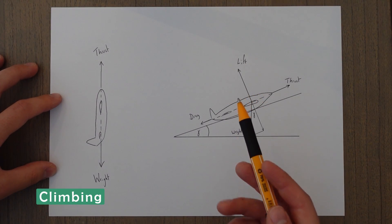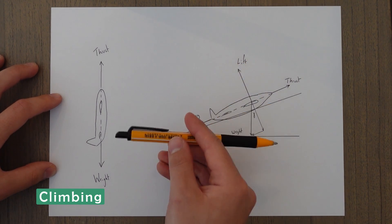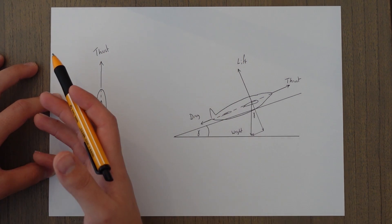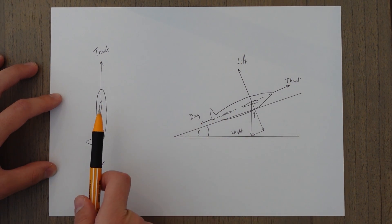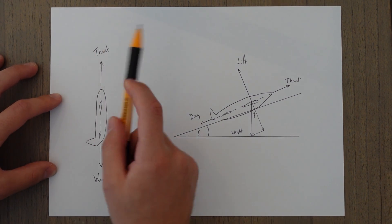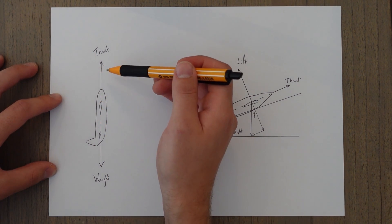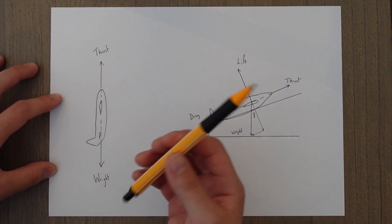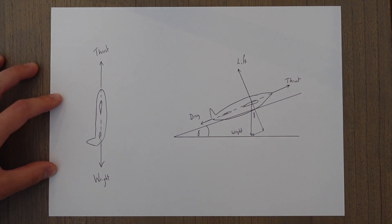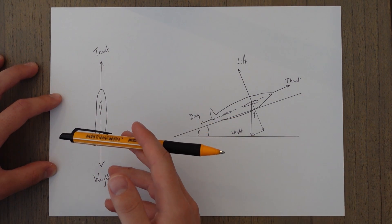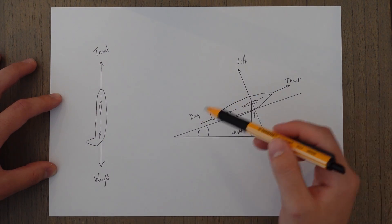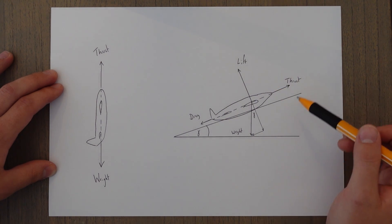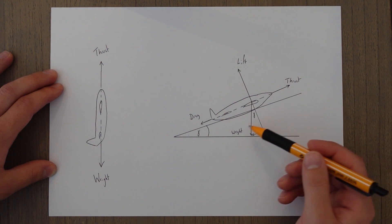When climbing, depending on the steepness of the climb — that flight path angle — different proportions of the weight act against the thrust and lift of the aircraft. An easy way to think of it: if we had a flight path angle of 90 degrees going straight up, then the aircraft weight is in direct opposition to the thrust. Since we don't climb straight up normally, our weight only partly opposes the thrust and partly adds to the drag. The amount of weight acting either against lift or thrust is based on the sine and cosine of the flight path angle.